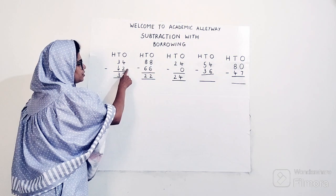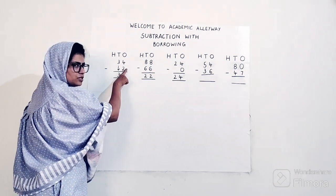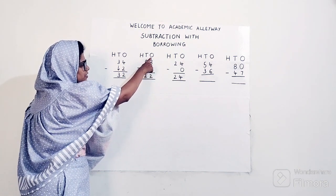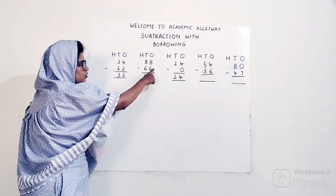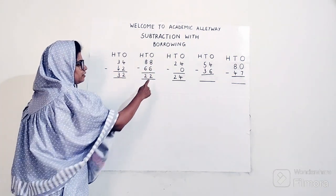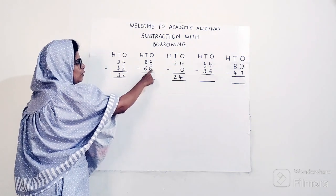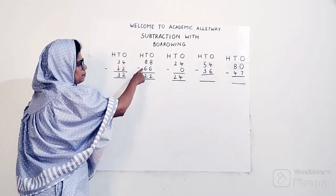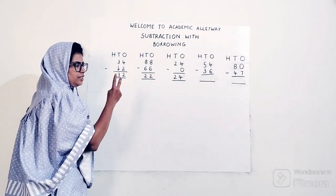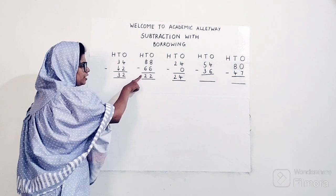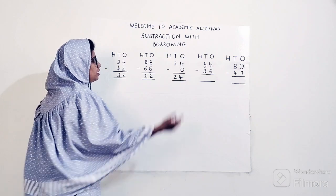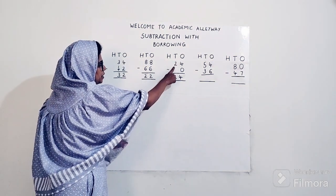Now the next example. Write HTO. The question is 88 minus 66. The difference here is there are double digits. Start again with ones: 8 minus 6, count after 6 till 8 — 7 and 8 — so answer is 2. Now go to the tens: again 8 minus 6, count after 6 till 8 — 7 and 8 — so 2. Final answer is 22.